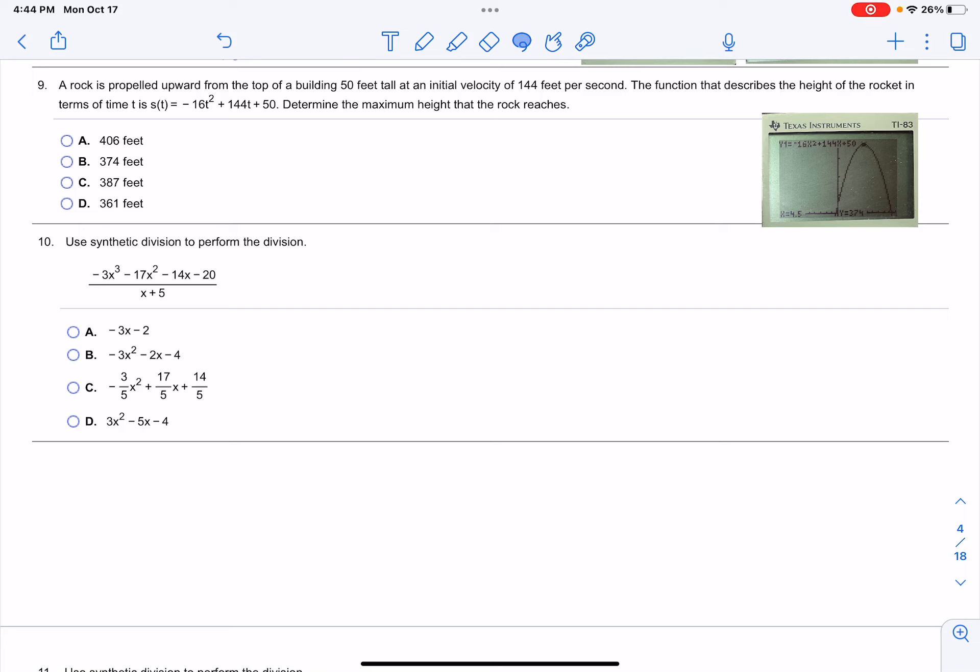For number 9, a rock is propelled upward from the top of a building 50 feet tall with an initial velocity of 144 feet per second.